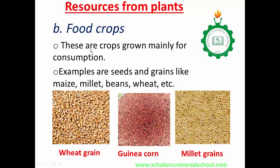Food crops are crops grown mainly for consumption. Examples are seeds and grains like maize, millet, beans, wheat, etc. The wheat, guinea corn, millet, and beans are grown mainly because of consumption. They are grown mainly for eating.